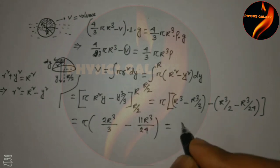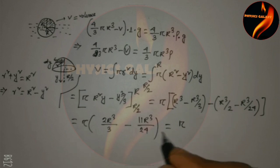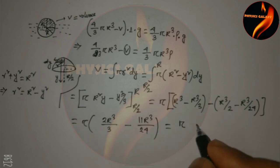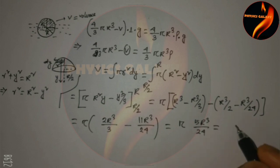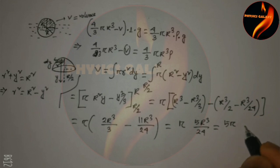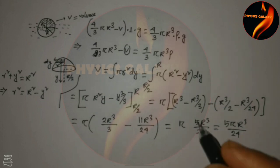Using LCM to combine terms: 2R³/3 − R³/24 = 16R³/24 − R³/24 = 15R³/24... simplifying gives V = 5πR³/24.